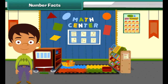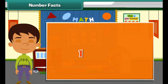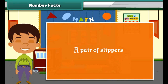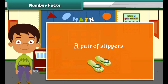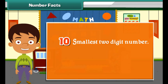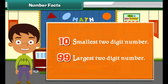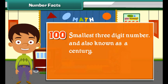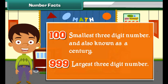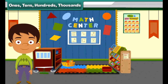Each number has an interesting fact associated with it. Number one is known as the ace. A pair is a group of two objects. Ten is the smallest two-digit number. Ninety-nine is the largest two-digit number. One hundred is also known as a century. One hundred is the smallest three-digit number, and 999 is the largest three-digit number.